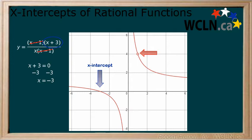Therefore, once we have discarded the points of discontinuity, the factors left in the numerator are the locations of the x-intercepts.